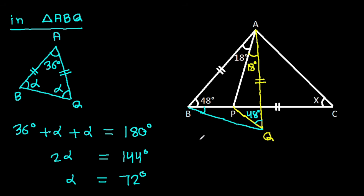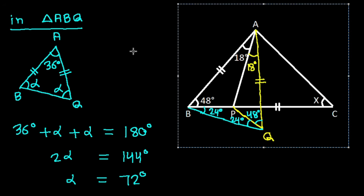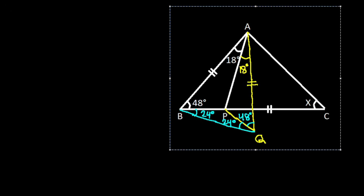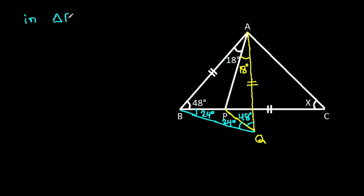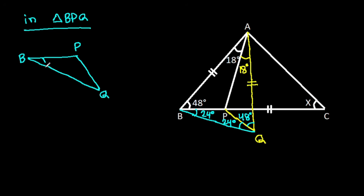So this angle will be 72 minus 48, that will be 24 degrees. And this angle will also be 72 minus 48, that will be 24 degrees. In triangle BPQ, this angle is 24 degrees and this angle is 24 degrees, so this angle will be 24 plus 24, that will be 48 degrees.